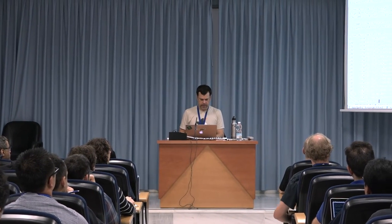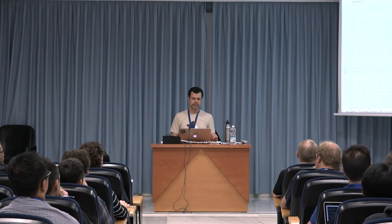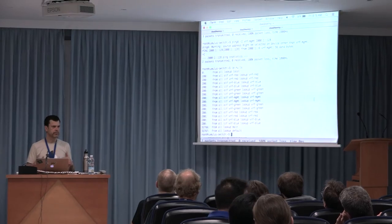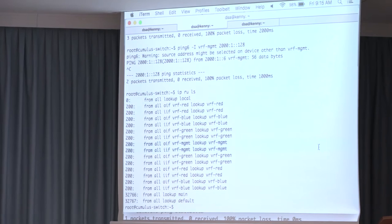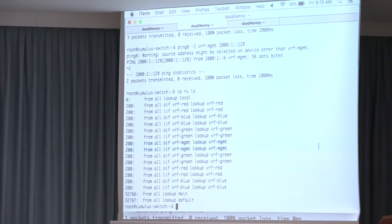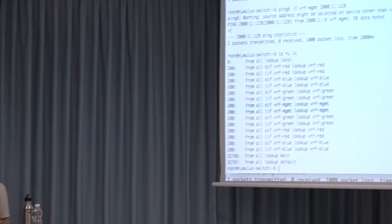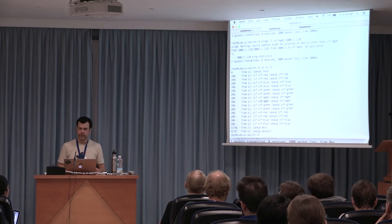From a rules perspective, both ingress and egress rules are needed to direct the packets to the right VRF table. Similarly, there are IPv6 rules. No network namespaces are used at all.